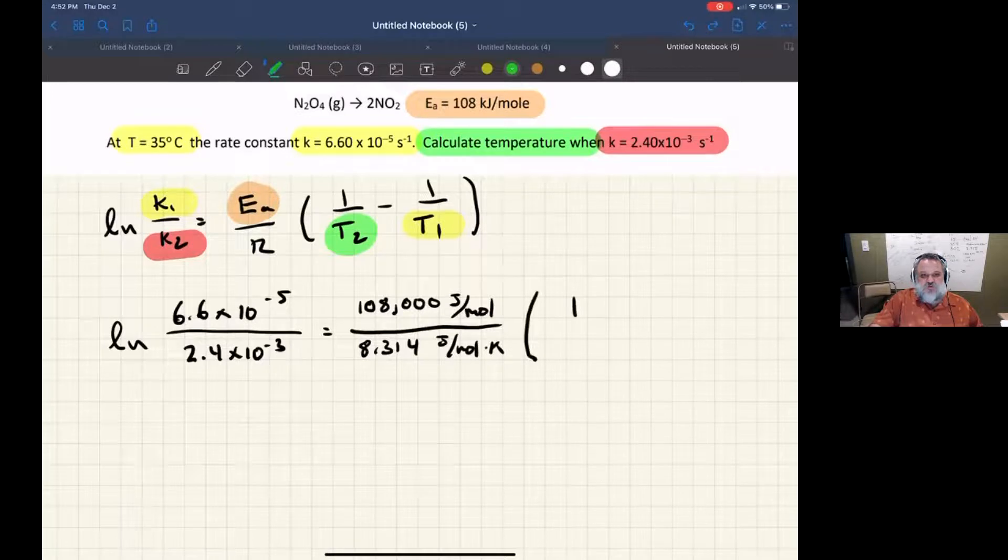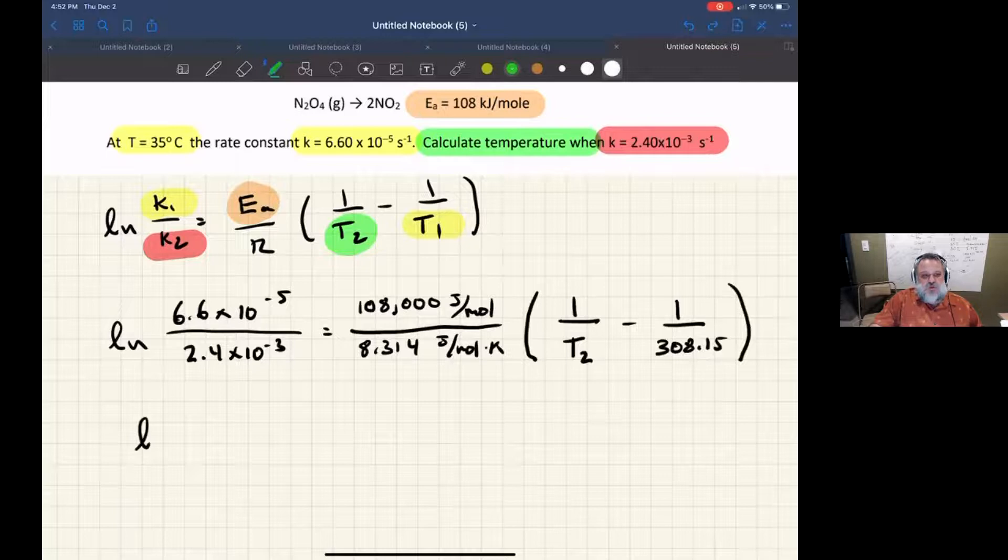Now, let's go ahead and get this parentheses worked out. It's T2 that we're looking for. And so I have to convert T1 to Kelvin. So that's 308 Kelvin. All right.